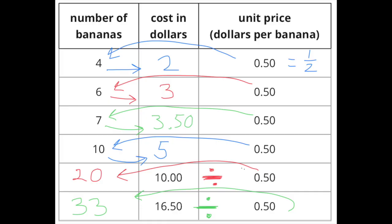Now these last two are different. Instead of giving you the number of bananas, they're giving you the cost in dollars. So this would be 10 divided by 50 cents, that would be 20. $16.50 divided by 50 cents, that would be 33.